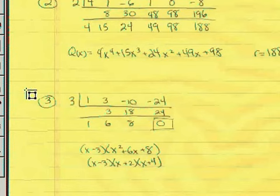We drop the 1, multiply 1 times 3 to get 3. We add and get 6. Multiply by 3 to get 18. We add and get 8. Multiply and get 24. We add and get 0, which shows us that the remainder is 0.